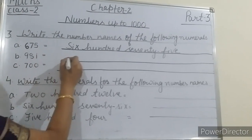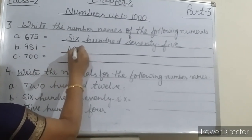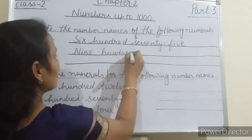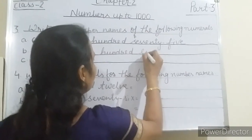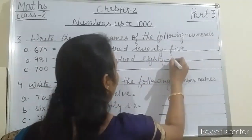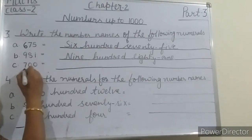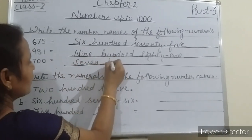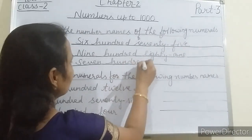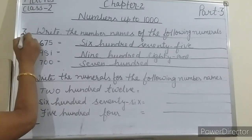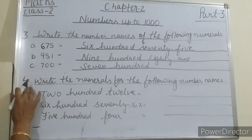Now, nine hundred eighty-one. And the last one is seven hundred. And the second question — here it is the fourth question from the checkpoint.